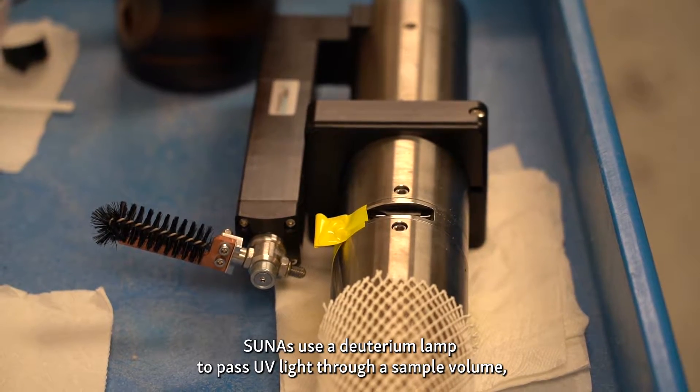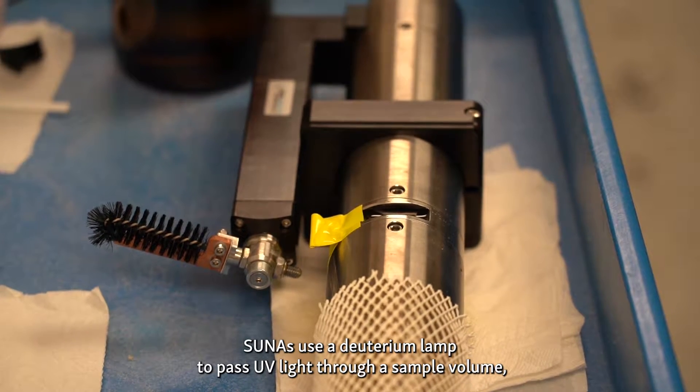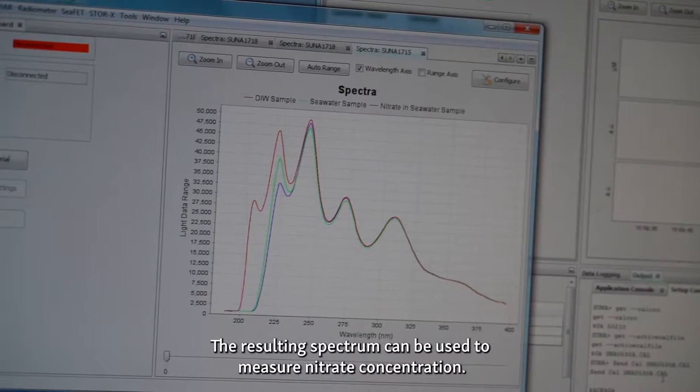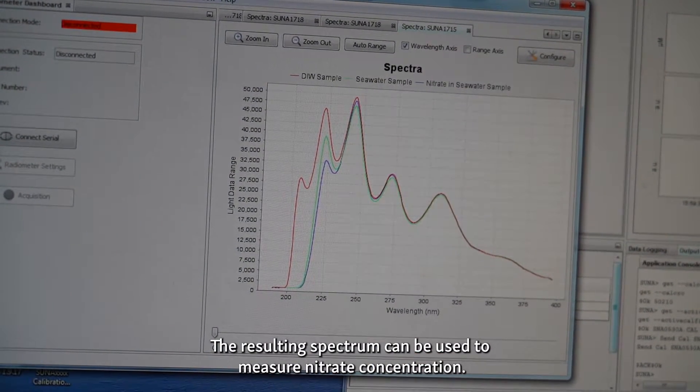SUNAs use a deuterium lamp to pass UV light through a sample volume, which is picked up by a spectrometer on the other end. The resulting spectrum can be used to measure nitrate concentrations.